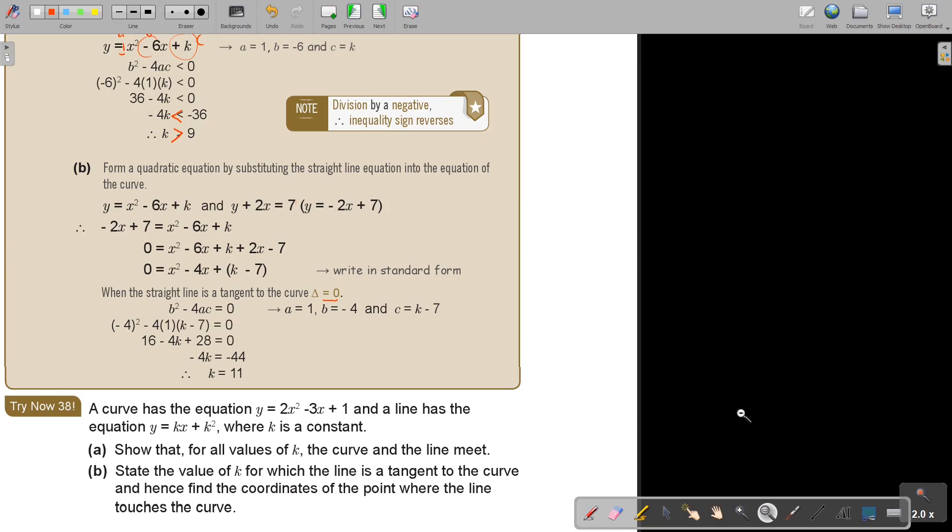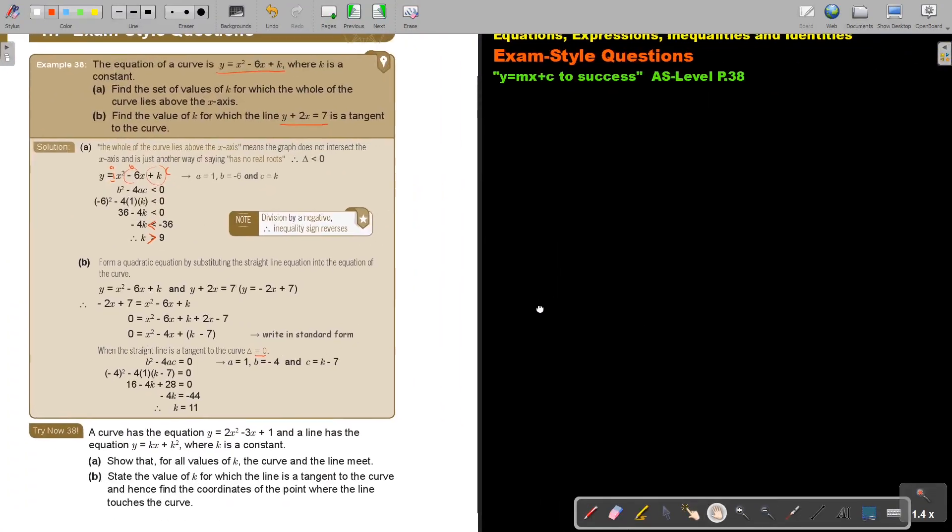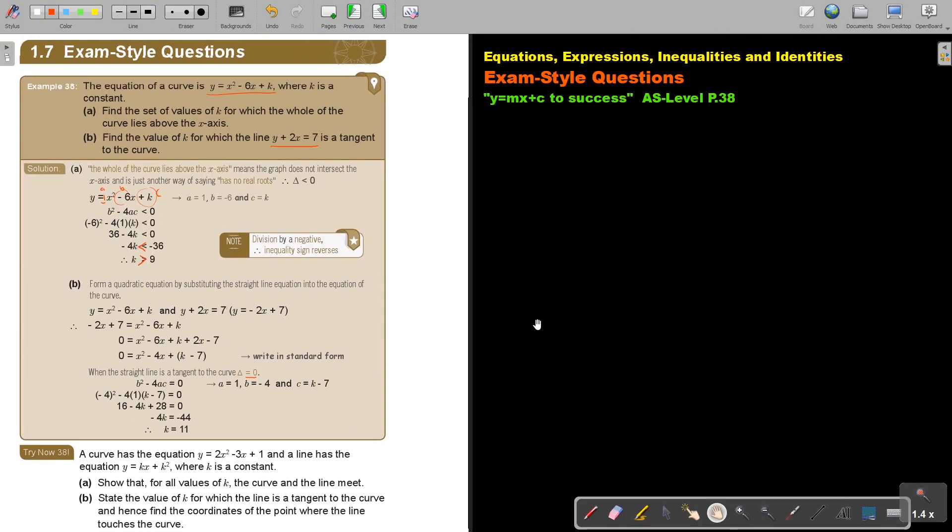Okay, let's start. Let's try Now 38, number 8. The curve has the equation y = 2x² - 3x + 1 and the line has the equation y = Kx + K² where K is a constant. Show that for all values of K, the curve and the line meet. Now what does that mean?